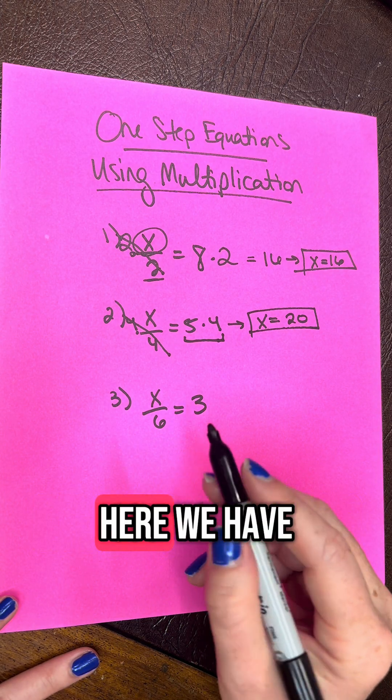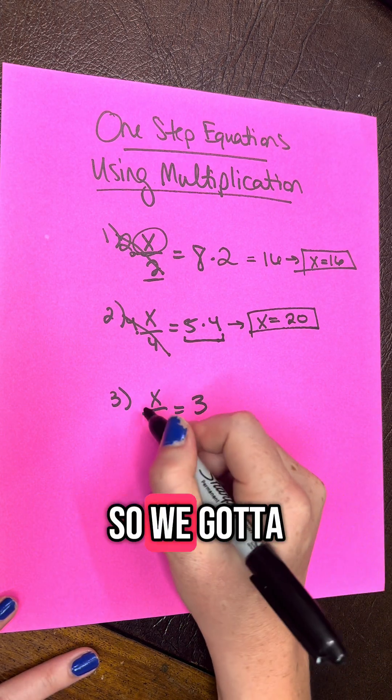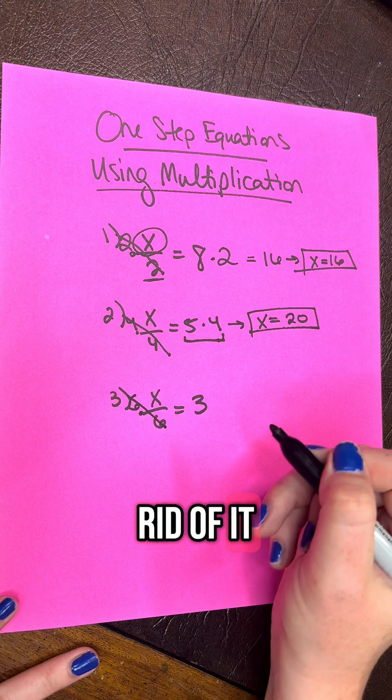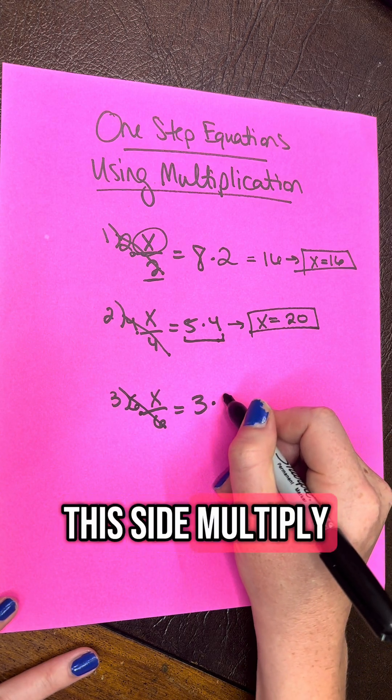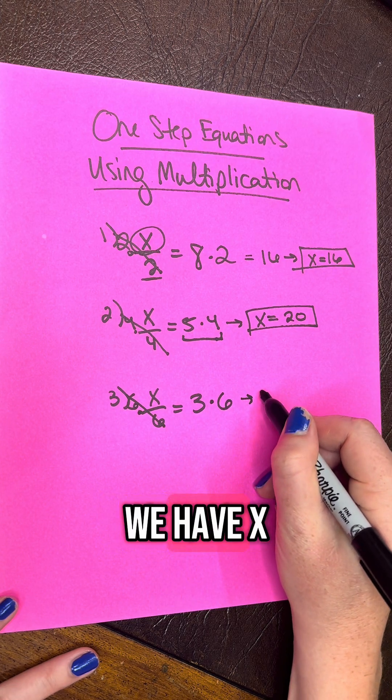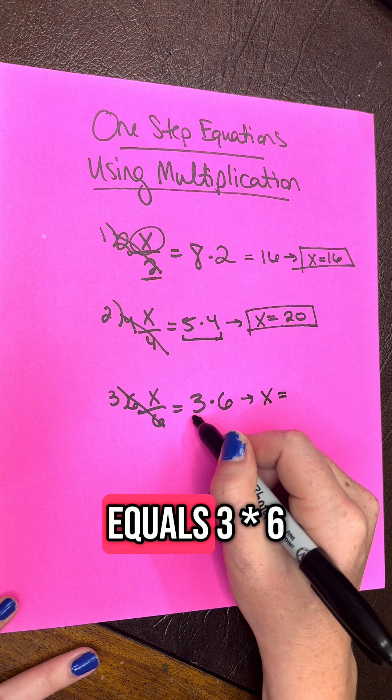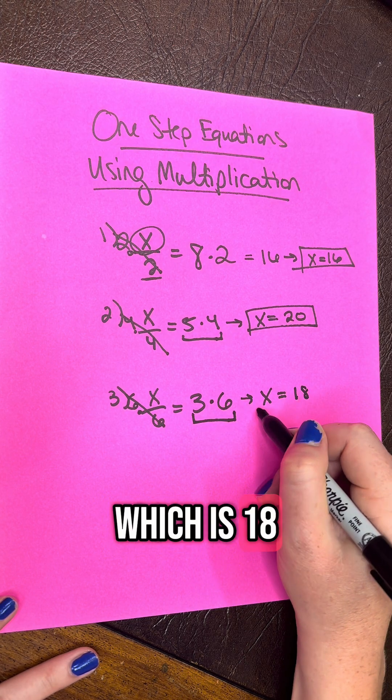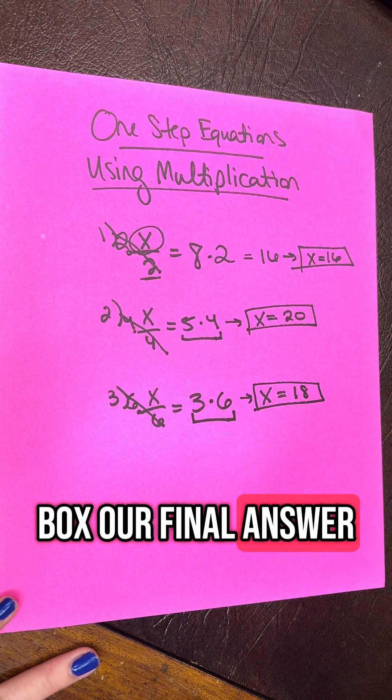Finally, number 3 here. We have a 6 on the bottom, so we got to clear that 6. So multiply by 6 to get rid of it. Same thing on this side, multiply by 6. So now we do a rewrite, we have x equals 3 times 6, which is 18, box our final answer.